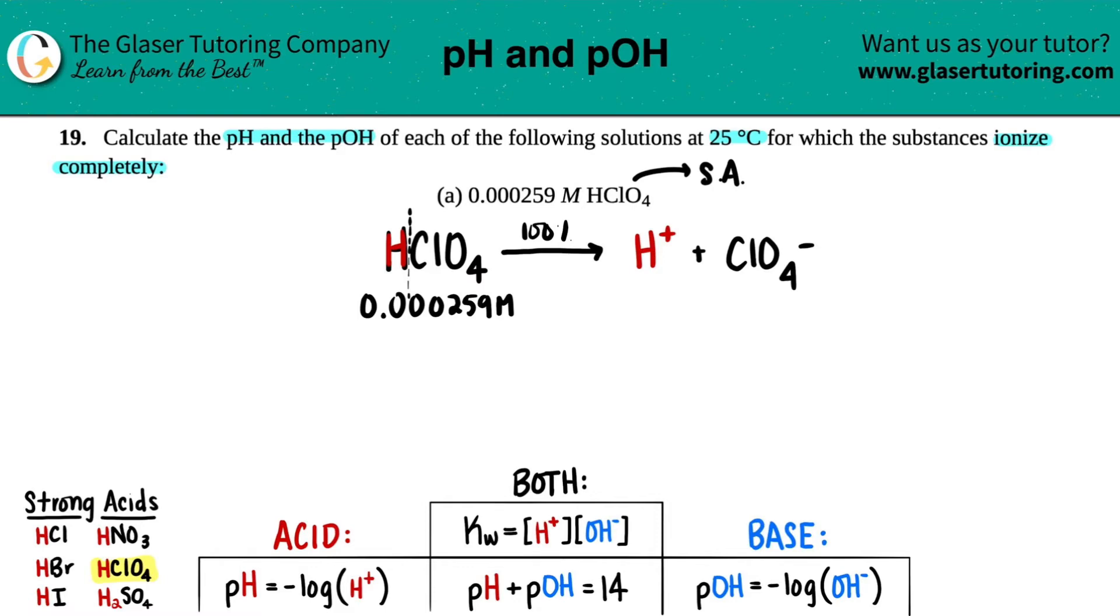This comes from the coefficients and the mole ratios, right? Because this is balanced, it's a one to one to one balanced equation. So all of the numbers are exactly the same. So if I have 0.000259 molarity of HClO4, the same number should be for the H plus. So in this case, I have 0.000259 molarity for the H plus.